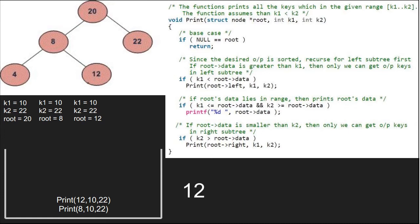Now, we check if k2 is greater than root's data. It is true, we pass the right child of 12 which is null. Since root is null, we return to the previous call. Execution for nodes 12 and 8 is over.